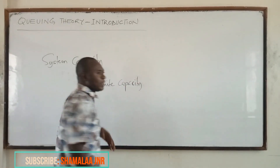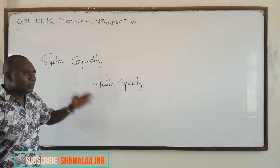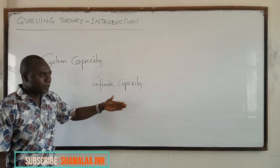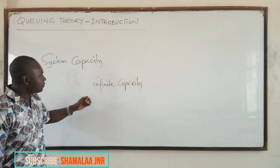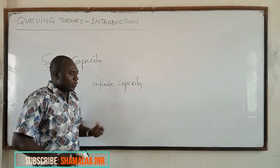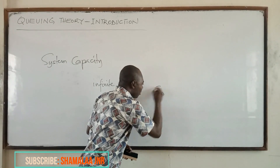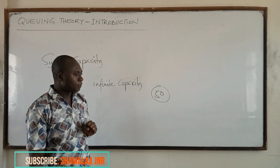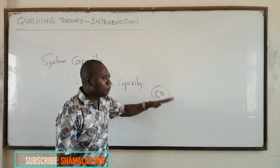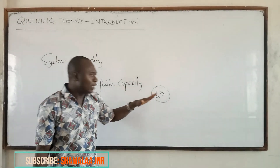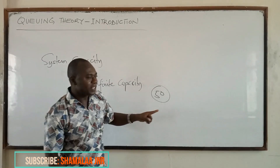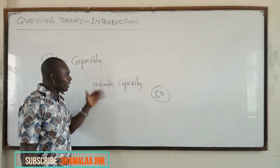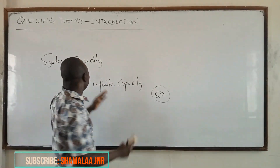On the other hand, we can also have a system which has a limit on the number of customers that are allowed to enter a facility. Such a system has a finite capacity. For example, a bank may say the total number of customers allowed inside is 50. Once they reach 50, nobody will be allowed to enter until one person leaves. Such systems are said to have finite capacities.